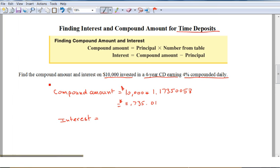But if we want to know what's the interest, how much money we made, we take the compound amount minus the principal. So $11,735.01 minus the principal, so the interest will be $1,735.01. I hope this was helpful.